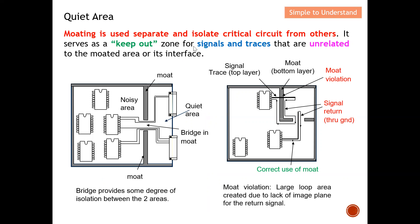Moating is used to separate and isolate critical circuits from others. Now let's look at this diagram. We want to create or carve out this quiet zone. If there are some traces related to those inside the quiet area that need to cross in, we want them to enter through the bridge. So all traces that need to enter the quiet area must enter through the gap of the bridge and into the quiet zone, providing a form of isolation between the two areas.